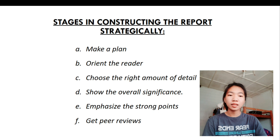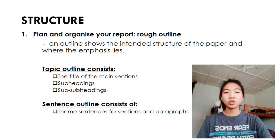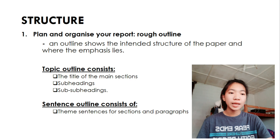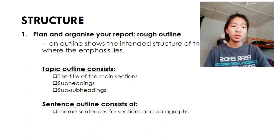For the third axis, which is the structure. Once you have decided on a strategic approach to presenting the contents in your written report, you still need the structure to link your concepts. First, plan and organize your report. Make a rough outline. An outline shows the intended structure of the paper and where the emphasis lies. When we say topic outline, it consists the title of the main sections, subheadings, sub-subheadings, while the sentence outline consists of theme sentences for sections and paragraphs.